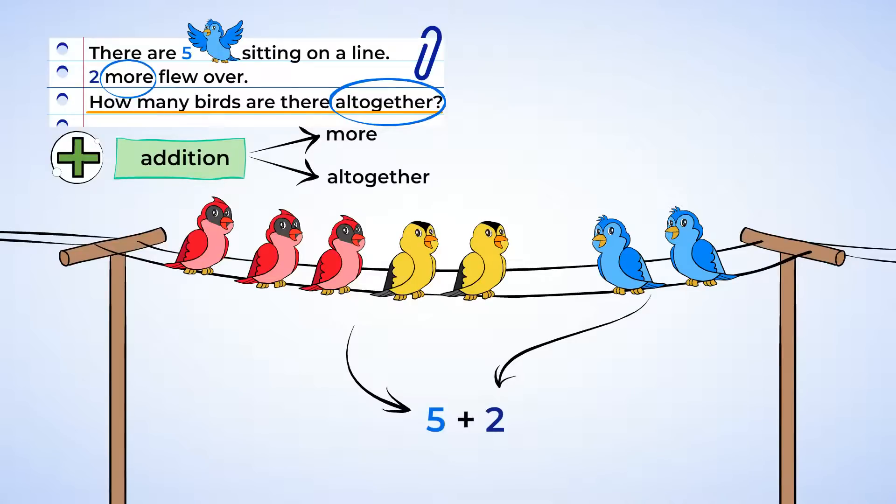Then, two more birds joined, so we're going to write a two on the other side of the plus sign. Now we want to find out how many birds there are all together. So we can write a box or a question mark here until we find the answer. Great job setting that up.